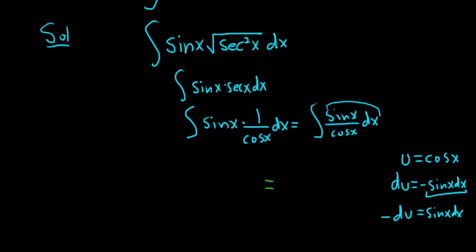So this is equal to, let's see, sine x dx. That whole piece is negative du, so negative 1 over u du, right?